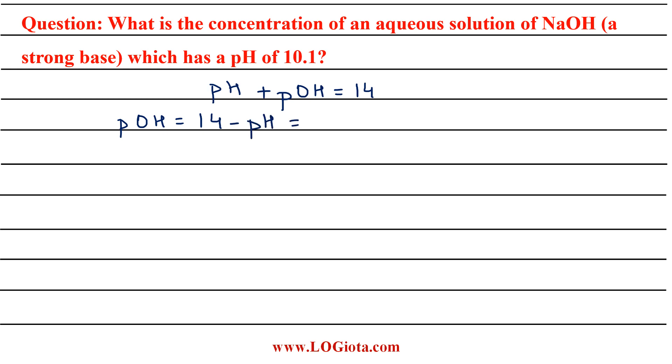Here we know the value of pH, so 14 minus 10.1. On calculating, we get the value as 3.9. So for this solution, pOH is equal to 3.9.